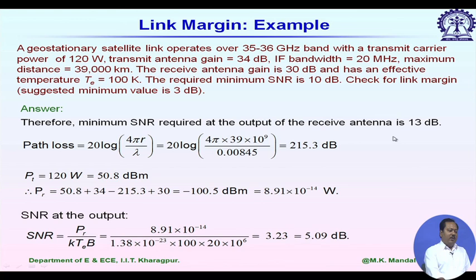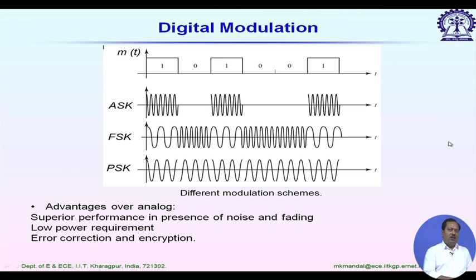To improve SNR to the required 13 dB, our options are: increase transmit power, increase transmit or receive antenna gain, or cool down the receiver to decrease the noise component. We have no control over separation distance or IF bandwidth since those depend on the application, so we must work with transmit antenna gain, receive antenna gain, transmit power, and receiver temperature.